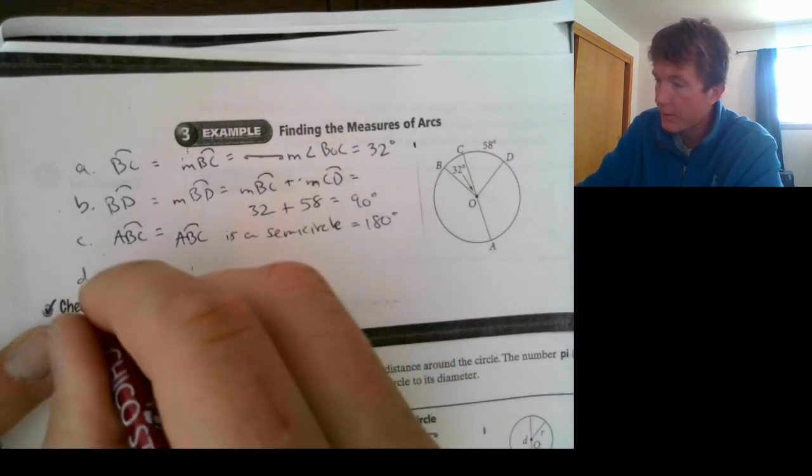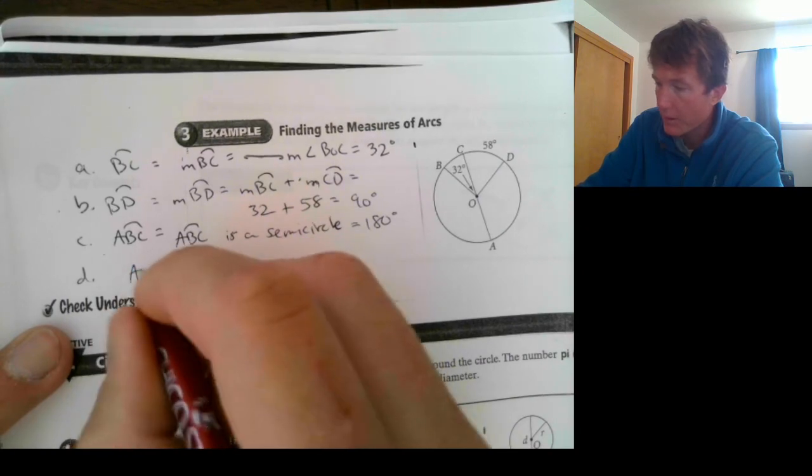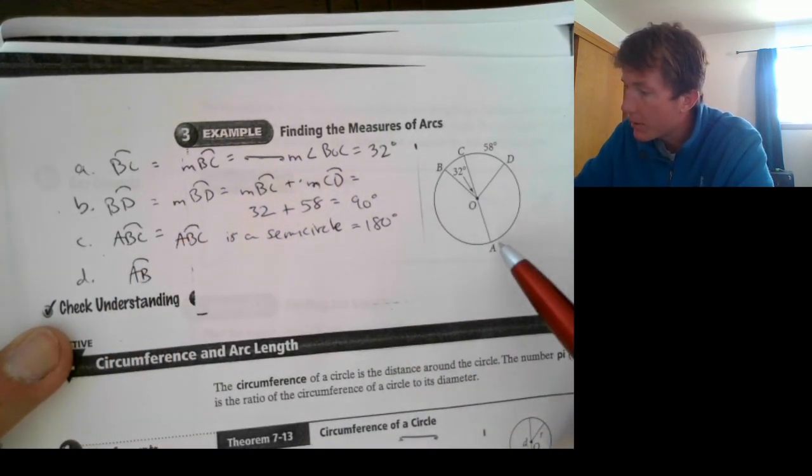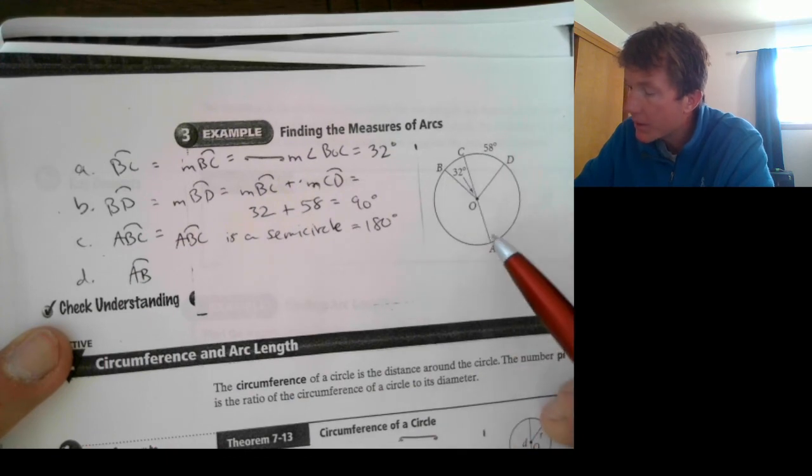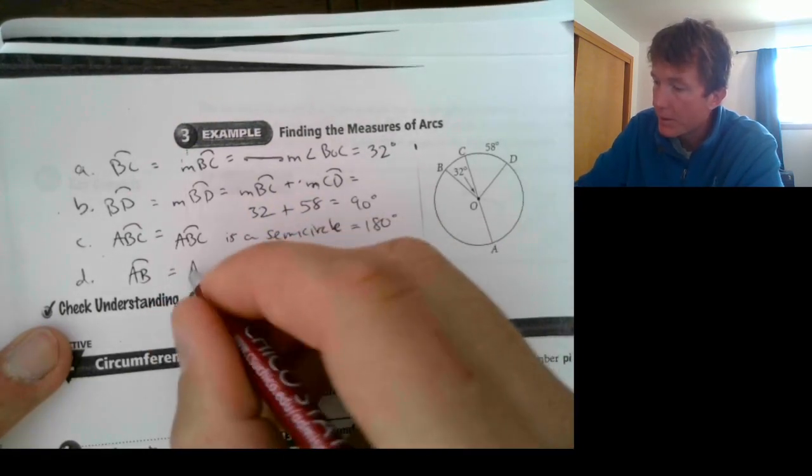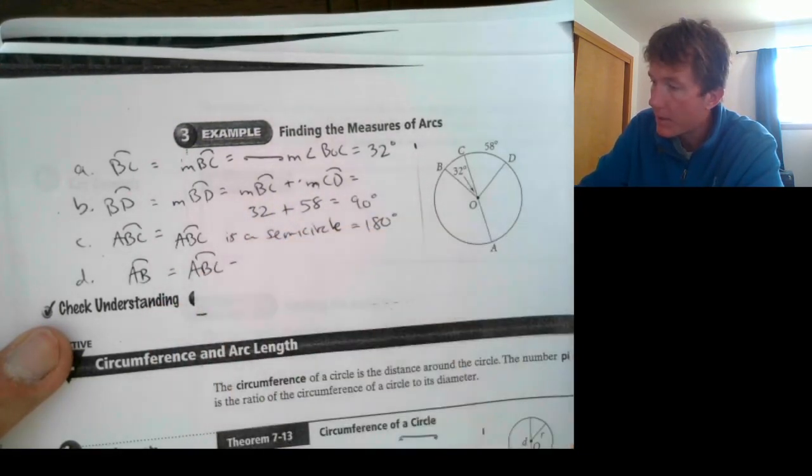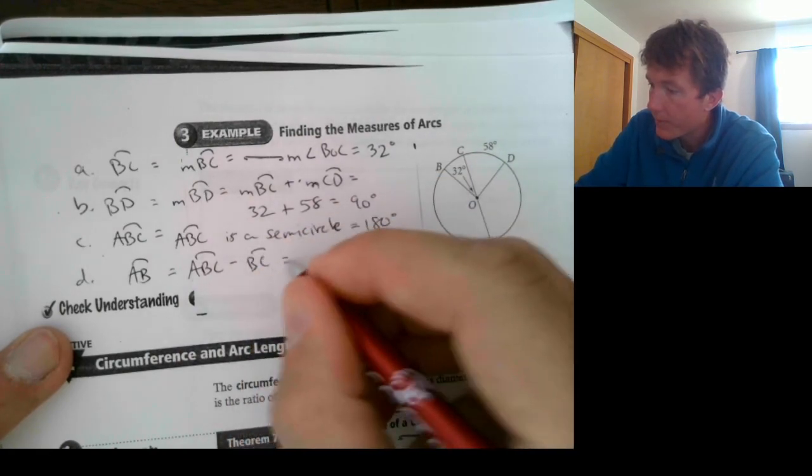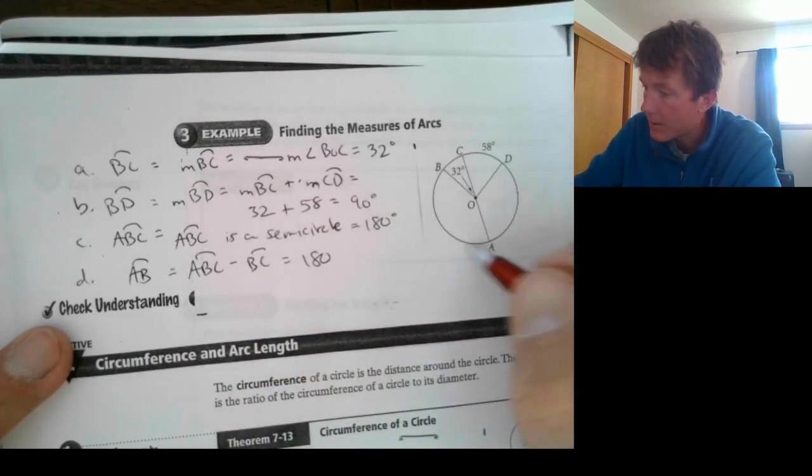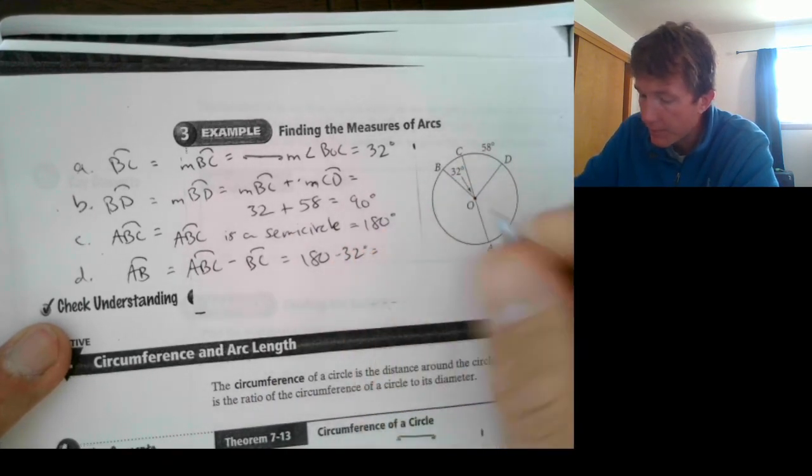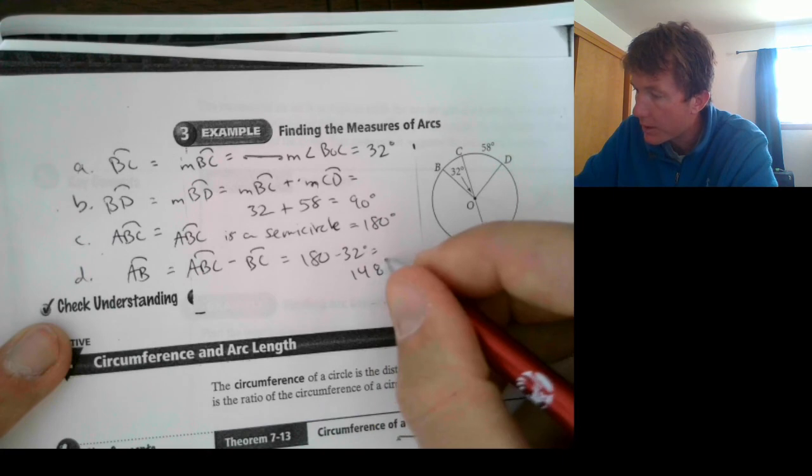And then, lastly, let's find the measure of arc AB. AB, where's AB? A to B. So, we're going to take the measure of the semicircle, and we're going to subtract that 32 right there. So, that's going to be the measure of ABC minus the arc BC, which is equal to 180. That's this whole semicircle, minus that 32 degrees right there. So, that's going to be 148 degrees.